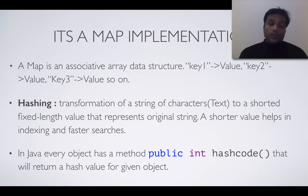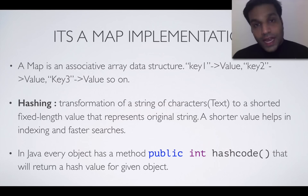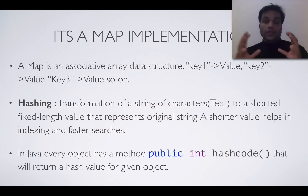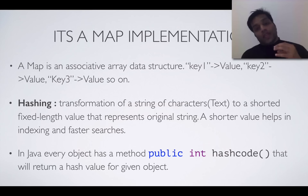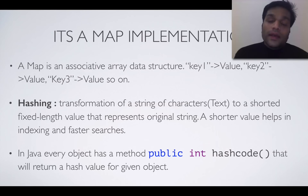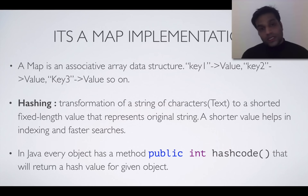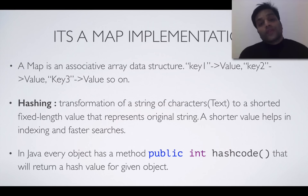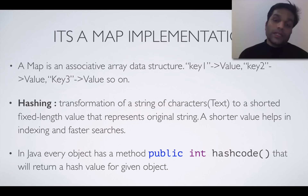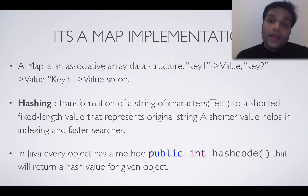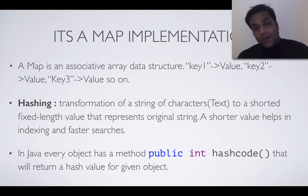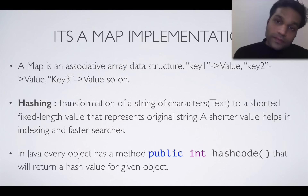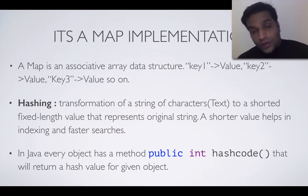In Java, each and every object has a hashCode() method available, which is supposed to return the hash of the object. For example, calling hashCode() on a string returns an integer. There is an equals-and-hashCode contract in Java: if two objects are equal, they should have the same hash code. It is very important to have a robust hashCode implementation in your classes. If you have difficulty implementing your own, you can always let the IDE generate it for you.